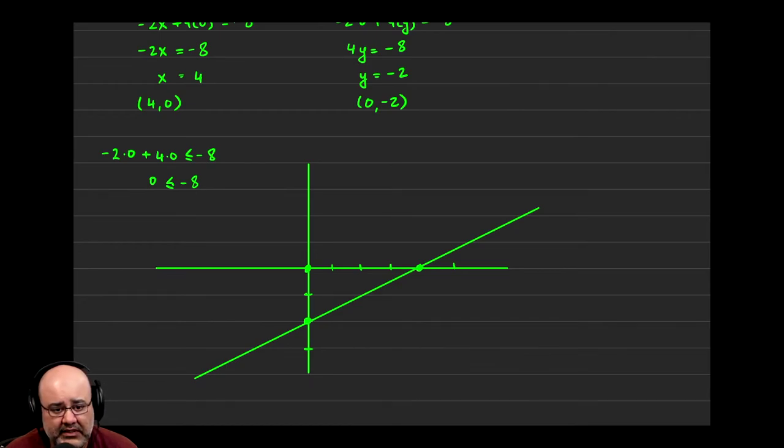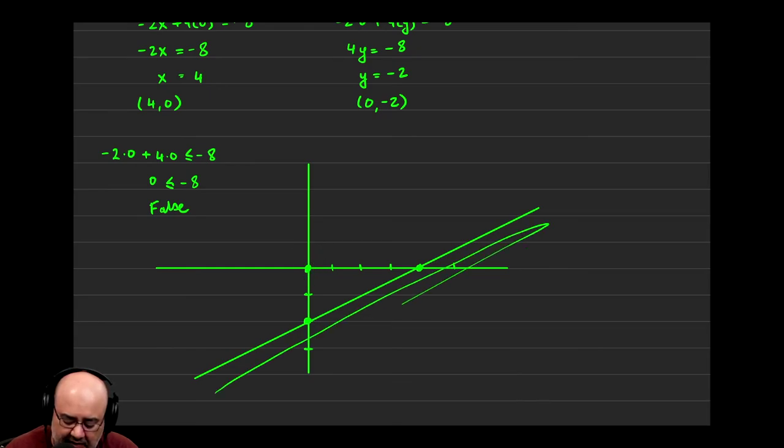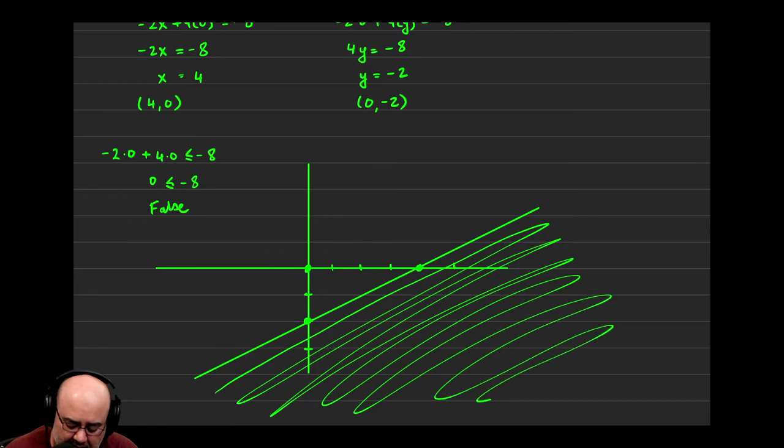So 0 ≤ -8 is a false statement. I would much rather have $0 than owe someone $8. So instead of shading on this side that has (0, 0) in it, we shade the opposite side. So everything here is going to be a solution, down and to the right.